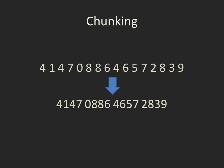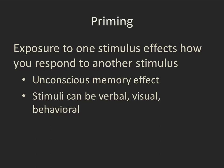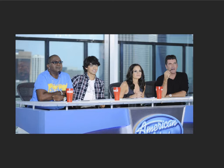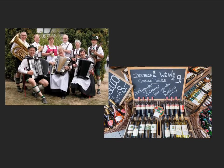Priming can best be described as an unconscious memory effect where we see, hear, or feel something that affects how we respond to something else. For example, if I showed you a yellow slide and then asked you to name a fruit, you'd be more likely to say banana or lemon than lime or orange. Priming is used in advertising all the time — you might watch American Idol without consciously noting the Coca-Cola cups, but half an hour later when thirsty, you're more likely to reach for it. A supermarket study showed more German wine sold when German music played and more French wine with French music.